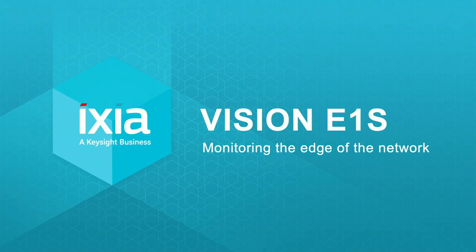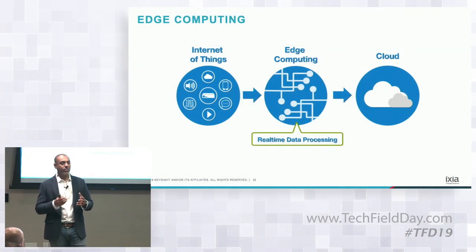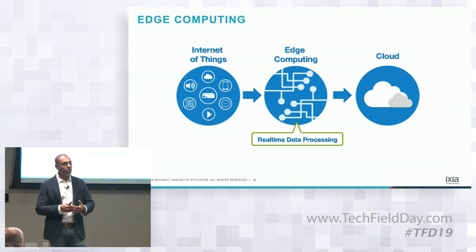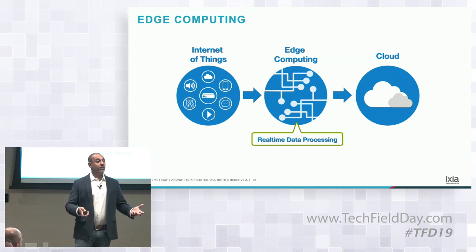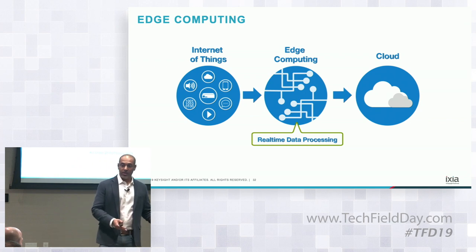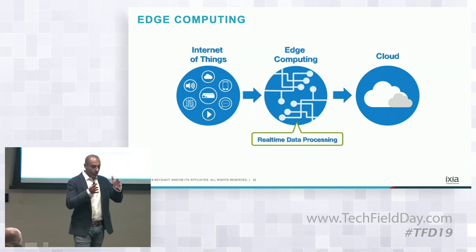This is really focused on monitoring the edge of the network. Edge computing and edge network tie together, and the reason is simple: a lot of data and a lot of customer workloads don't always traverse all the way to the cloud. They stay local — distribution centers, manufacturing, healthcare, building-to-building communication. So if you want to monitor something, you monitor where the data is. You don't move it around.